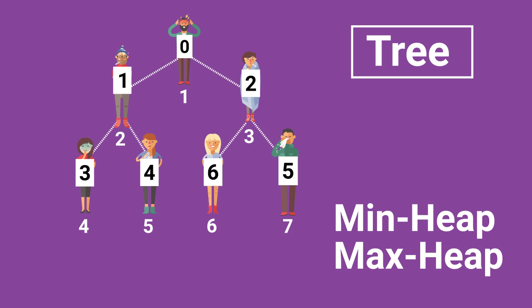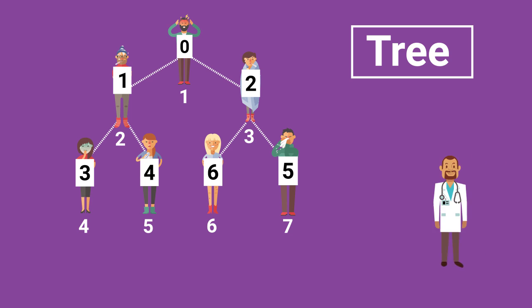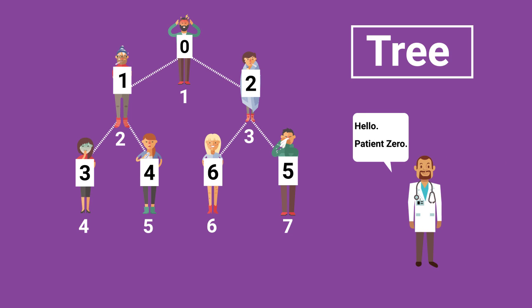This means that you can always quickly access the smallest value, or largest in the case of a max-heap, because it will always be at the top of the tree. So, in the case of the emergency room, you could use a priority queue based on a heap to store the patient with the highest priority at the top. In Java, this is implemented using the PriorityQueue class.